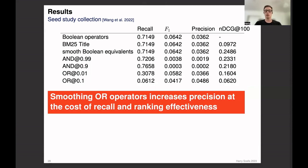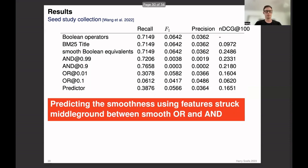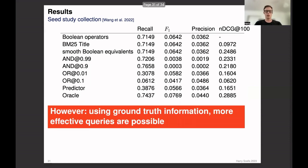When we take all of the AND operators in a query and smooth them by a fixed amount, we're able to increase the recall at the cost of precision and ranking effectiveness. Meanwhile, when we take all of the OR operators in a query and smooth them by a fixed amount instead, we can increase the precision at the cost of recall and ranking effectiveness. We also investigated developing a predictor for predicting how smooth the operators should be. And here we found that this struck a middle ground between fixing the AND and the OR smoothing. We also used the ground truth information and found that when we did so, we're able to find more effective queries in terms of recall, precision, and several ranking metrics.